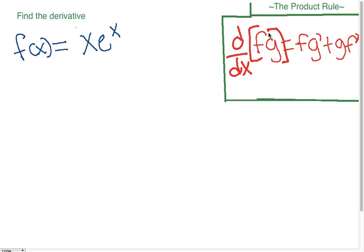So f is our first function and g is our second function. So in numerical terms, well actually in a formula this is what it means. The derivative of f times g equals f times g prime plus g times f prime.